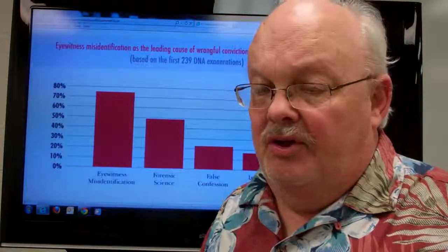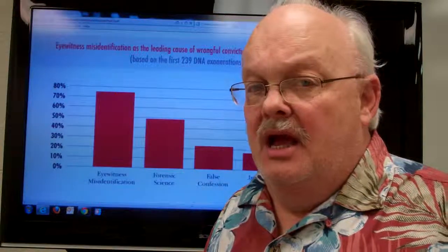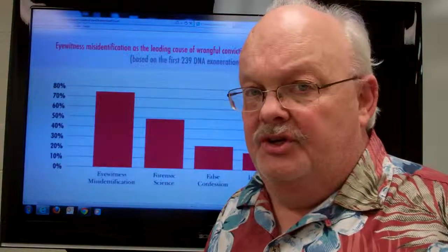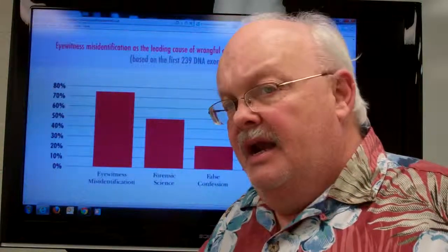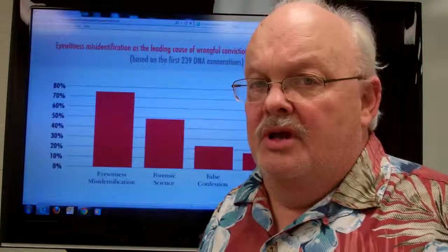One case called An Innocent Man, John Grisham wrote a book about it. A terrible situation where the actual informant killed the girl, and an innocent man went to death row.